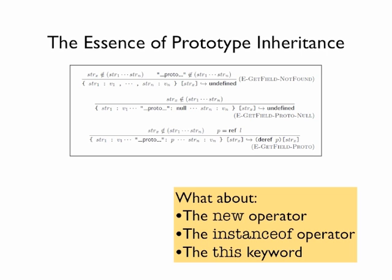But, JavaScript programs use several other operators to manipulate objects. The new operator, the instanceof operator, the this keyword. But none of those are in LambdaJS. Why not? Well, they wouldn't fit on the slide, so we threw them out.